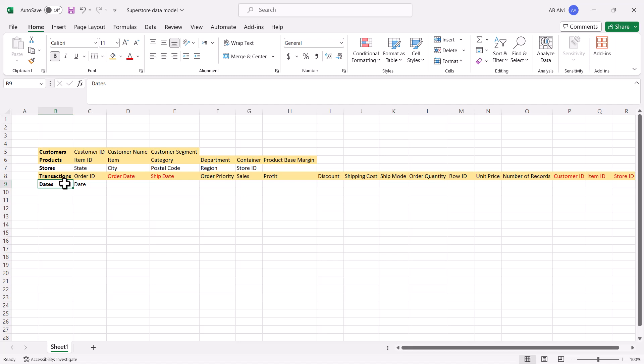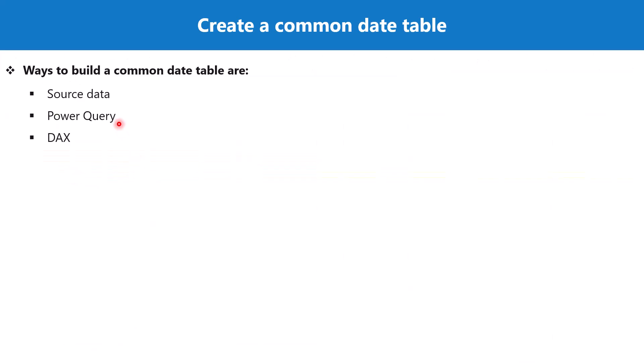This topic is from the second learning path, but since it is related to the data modeling example we are doing, I have covered it here. Now let's see how we can create a calendar or date table. If you are working in the Power BI environment, there are multiple ways to build a common date table or date dimension. The first option is to bring in the date table from your source data.